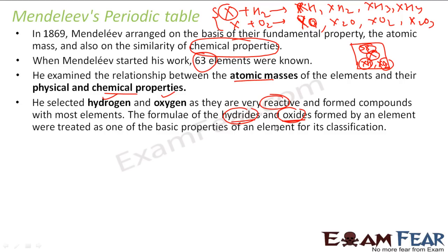The last one — Newlands' law of octaves — arranged elements based on atomic mass alone; his parameter was atomic mass, and he found that they coincidentally had similar chemical properties. But for Mendeleev, the critical thing was chemical property. He arranged by atomic mass and created gaps in the table where he found missing elements. Both scientists had a different approach.